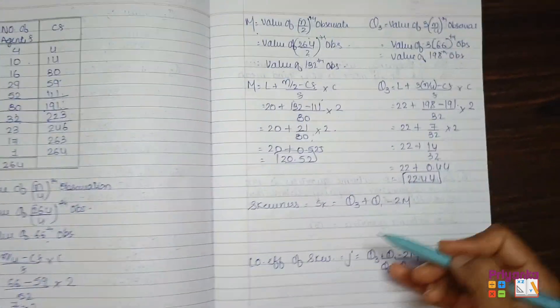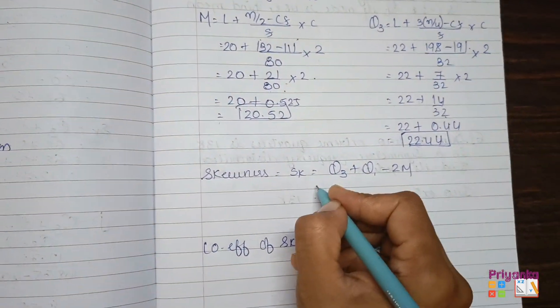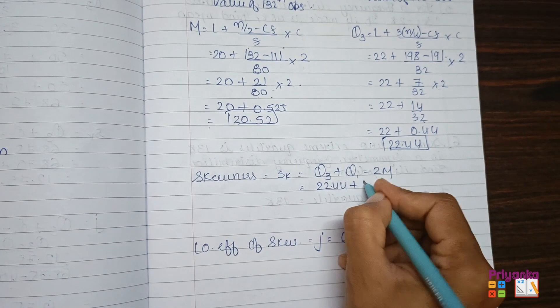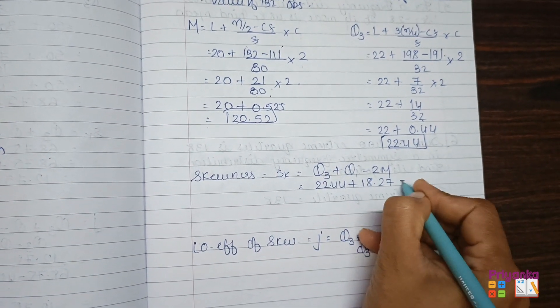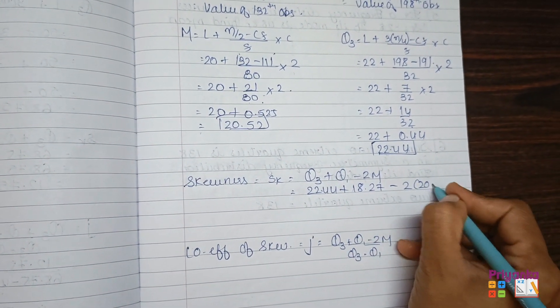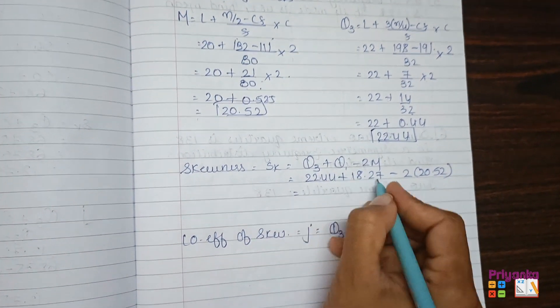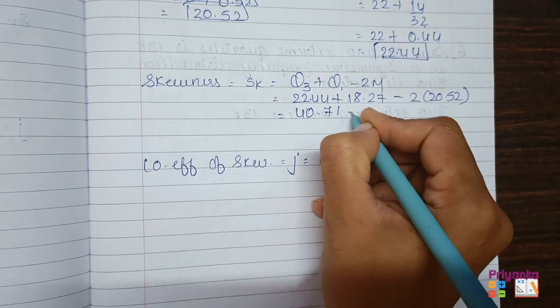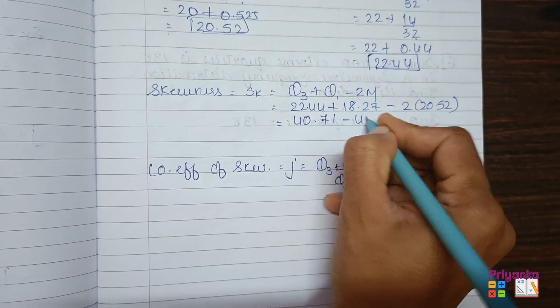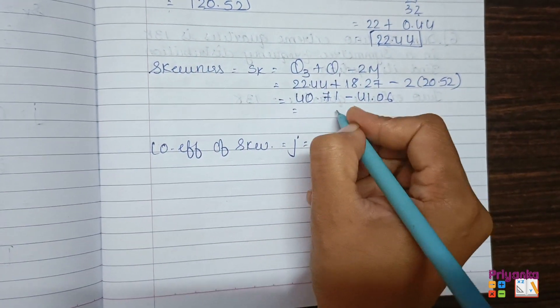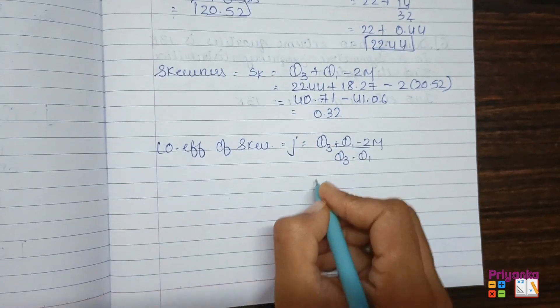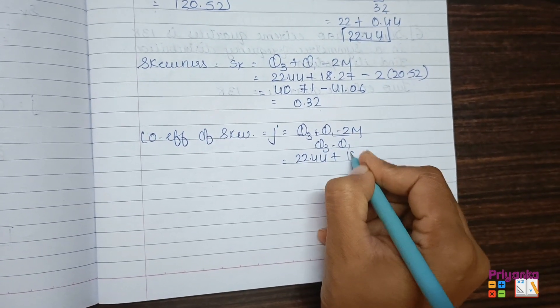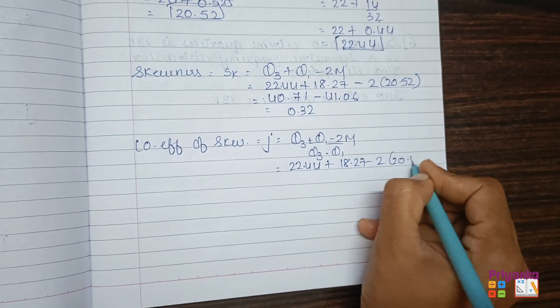So let's keep value into this formula of skewness. Q3, which we found is 22.44, Q1 18.27, minus 2 into median, that is 20.52. So the addition of these two, you will get 40.71 minus 2 into 20.53 will be 41.06. Get them subtract, you will get negative 0.35.